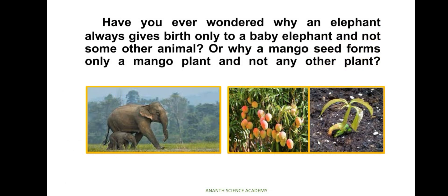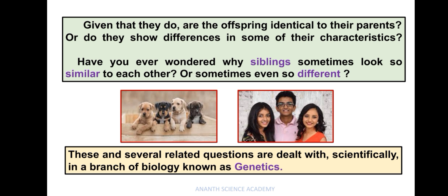Have you ever wondered why an elephant always gives birth only to a baby elephant and not any other animal, or why a mango seed forms only a mango plant and not any other plant? Given that they do, are the offspring identical to their parents or do they show differences in some of their characteristics? Have you ever wondered why siblings sometimes look so similar to each other, or sometimes even so different?